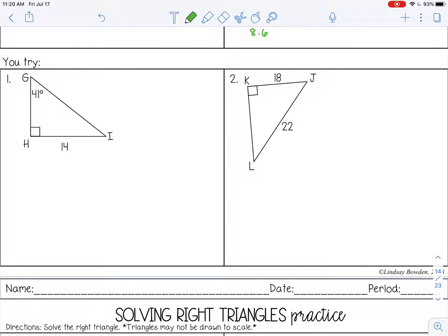In example number 1, I'm missing the measure of angle I, I'm missing side GH and side GI. So I'm going to solve for the measure of angle I first. So 90 minus 41 gives me 49 degrees. And then I'm just going to label these x and y. So let's solve for x first. So I'm going to use 41 degrees. I'm going to use opposite and adjacent, so tangent. Opposite over adjacent. So x is in the denominator. That means I need to divide. And I got 16.1.